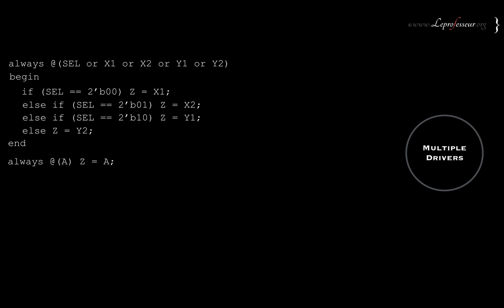Multiple drivers is a case when you are trying to assign different values to the same output or same register in two different always blocks. The tool will get confused whether it should take value y2 or a to z. This will throw a multiple drivers problem and the tool will not proceed through synthesis — you will have to go back and fix it.